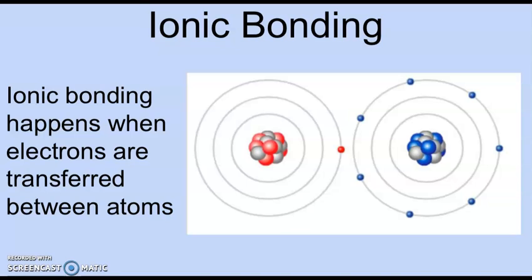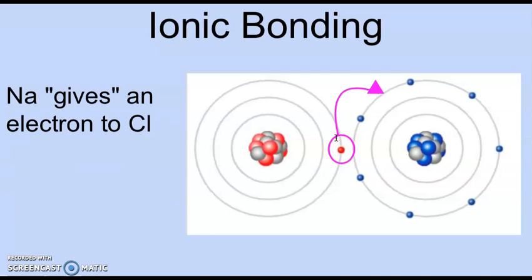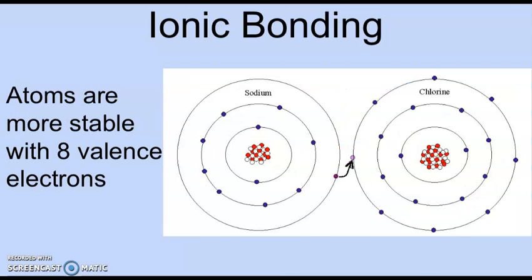This type of bonding, or ionic bonding, happens when electrons are transferred between atoms. Sodium gives one electron to chlorine. Now that sodium has given an electron to chlorine, it has eight valence electrons and chlorine has eight valence electrons. Atoms are generally more stable with eight valence electrons, the octet rule.